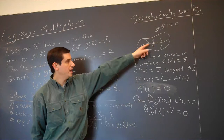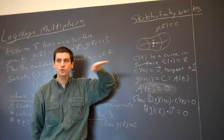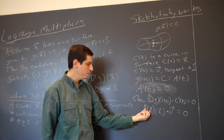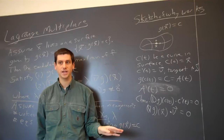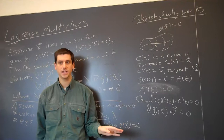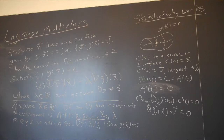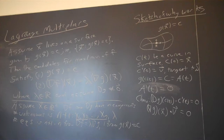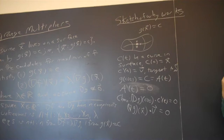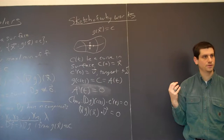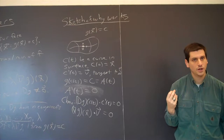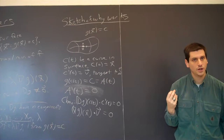There's only one direction left for the gradient of g to point. It points in the direction of greatest change — perpendicular to the surface. The gradient of g is normal to the surface. For example, let g of x, y, z equal x squared plus y squared plus z squared. Then g of x, y, z equals 1 is the unit sphere, and the gradient of g is 2x, 2y, 2z — pointing outward, perpendicular to the sphere.